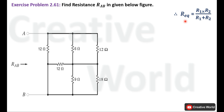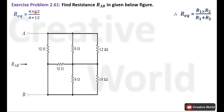R equivalent equals R1 multiplied by R2 divided by R1 plus R2. For this parallel connection R1 is 6 ohm and R2 is 12 ohm. Placing values into the formula: the product of 6 and 12 is 72, and the sum of 6 and 12 is 18. Dividing 72 by 18 gives R equivalent equal to 4 ohm.